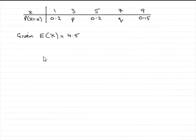In the previous part of the question, we found that P was 0.3 and Q was 0.15. So what I'll do is update the table. We've got P is 0.3 and Q is 0.15.